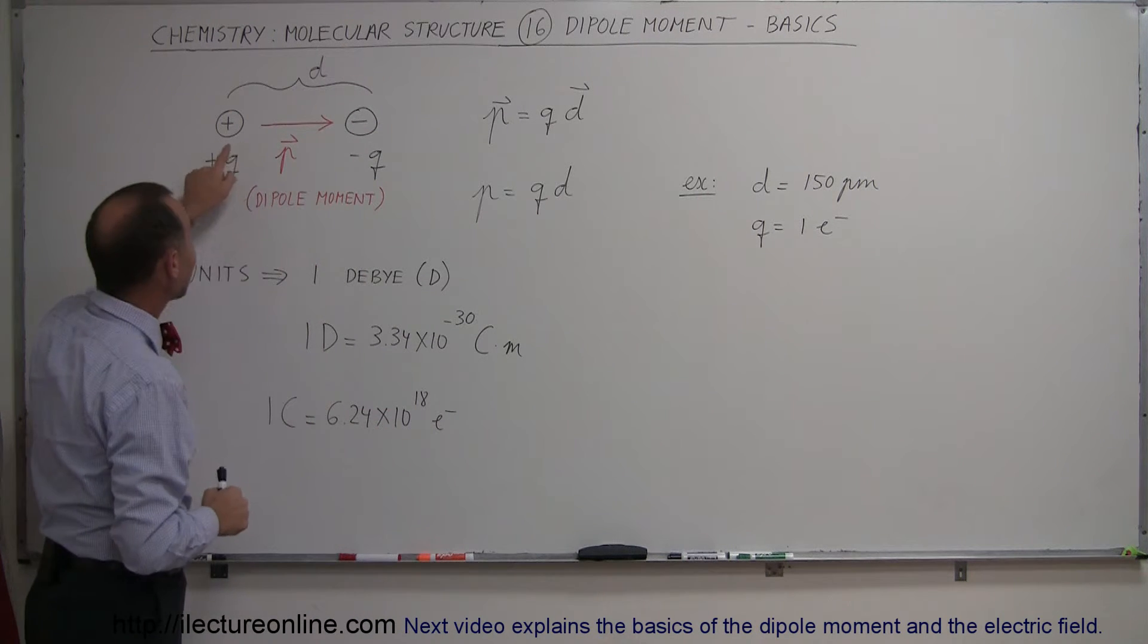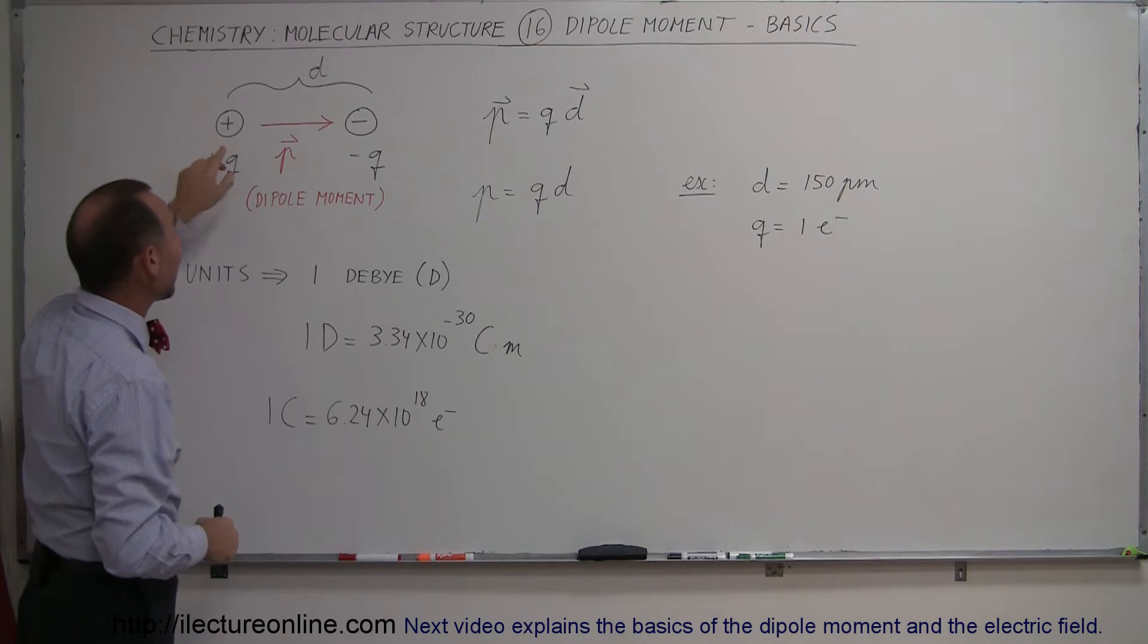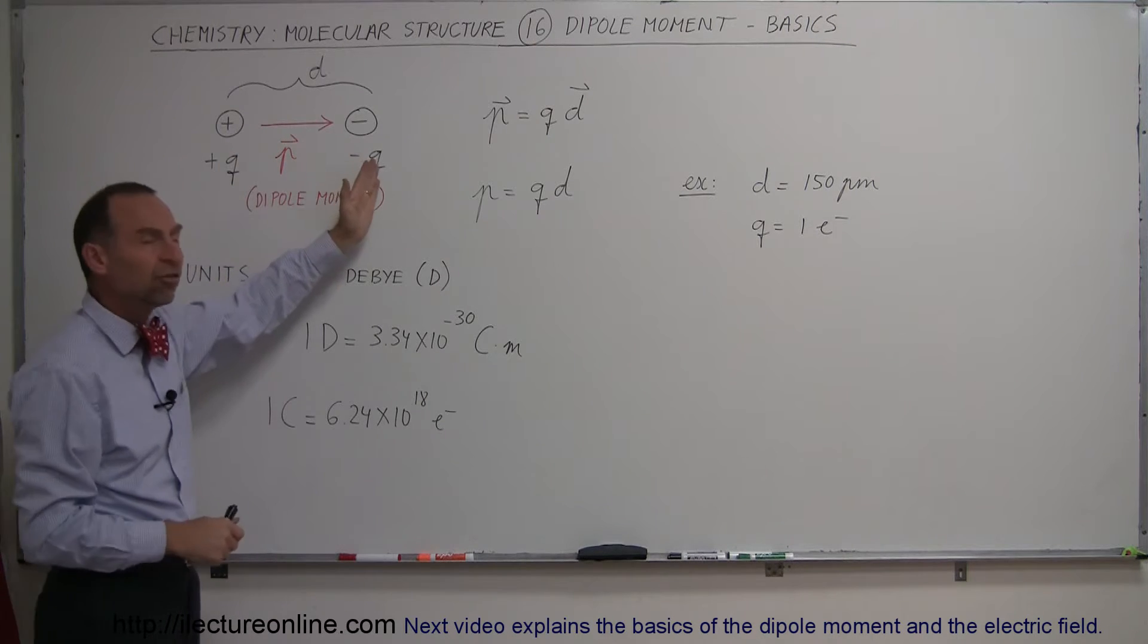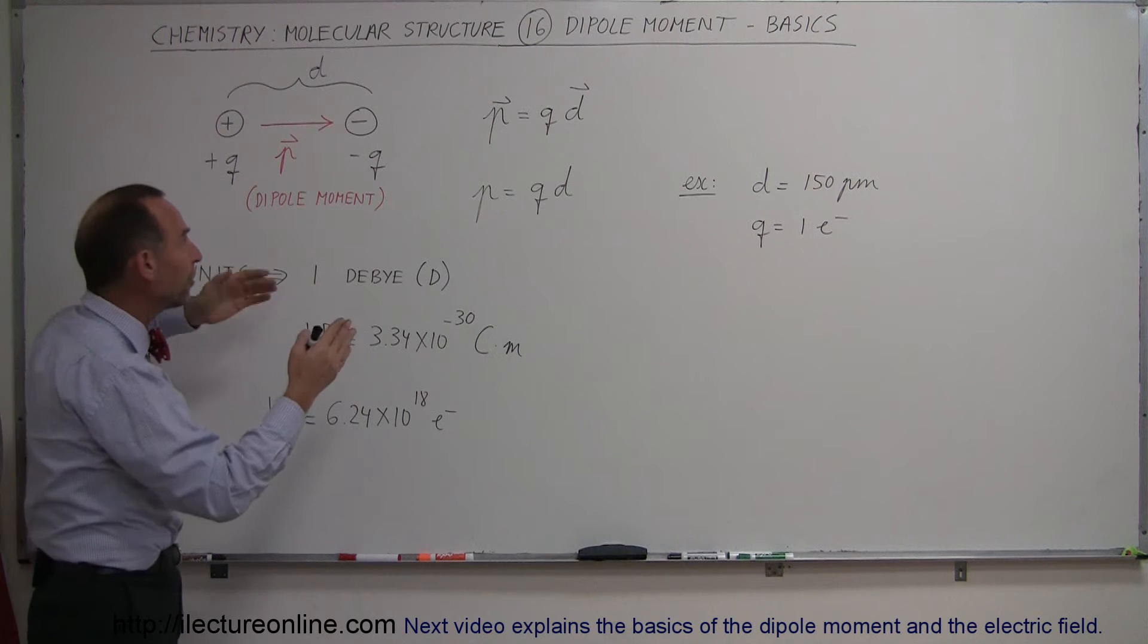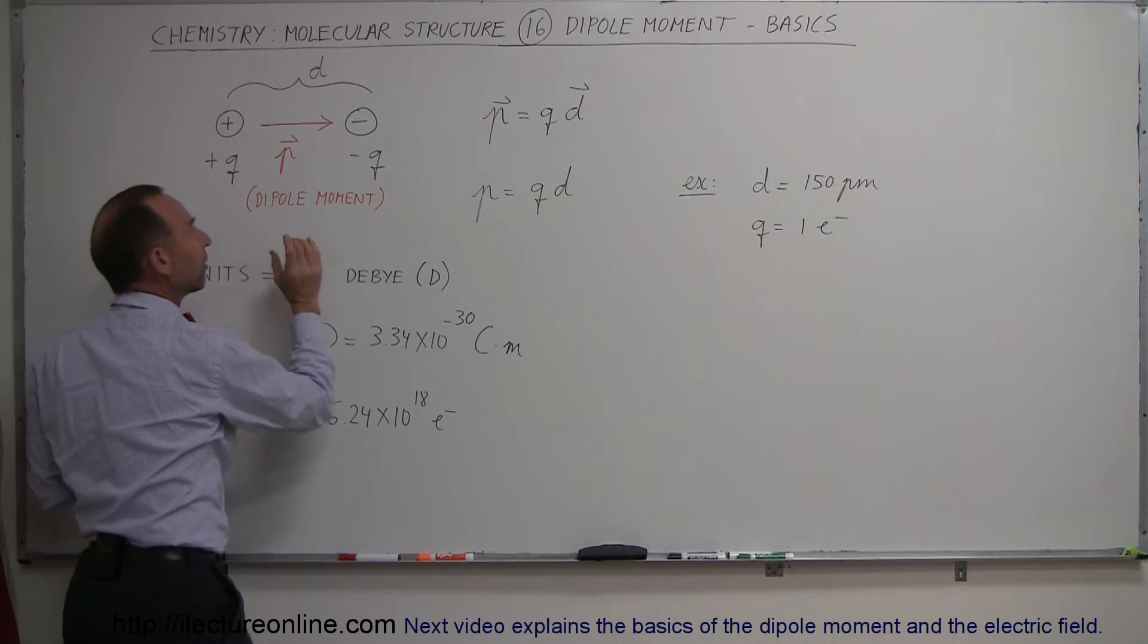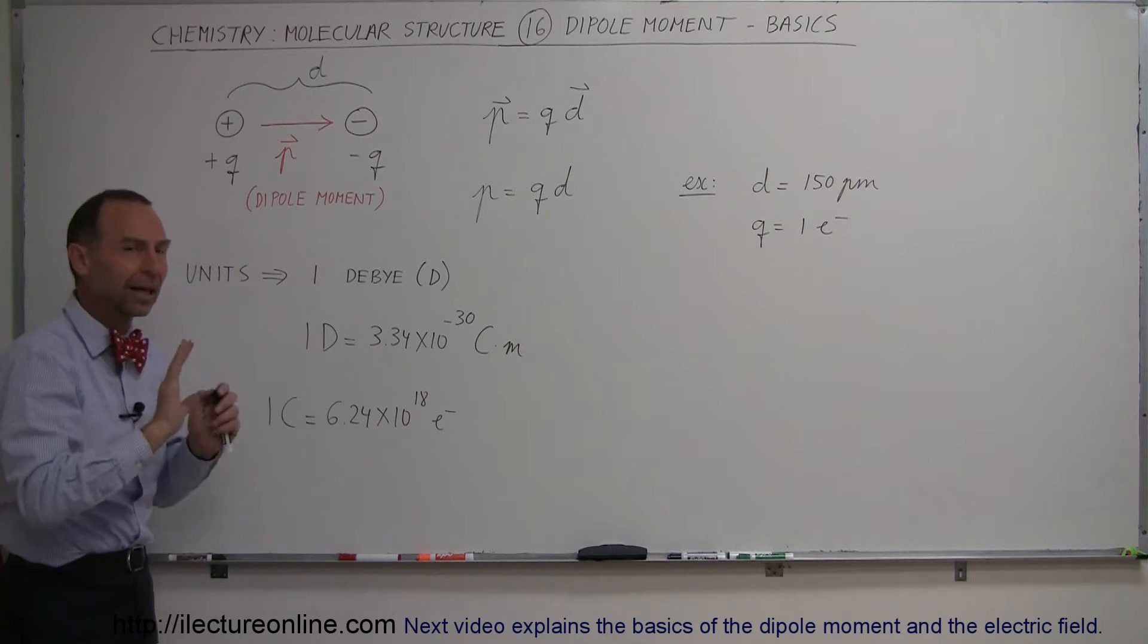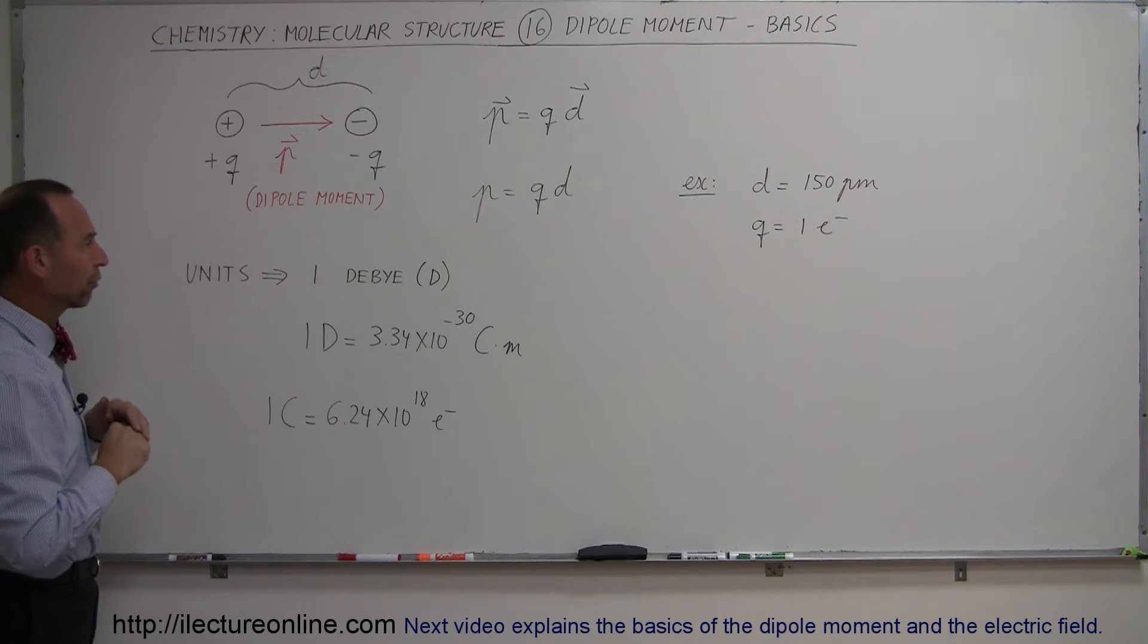Now notice you don't add the charges together. You have a positive charge on one side and an exact equal negative charge on the other side. Whatever they happen to be, you just take the magnitude of that charge and represent it here. So you don't double it or anything like that.